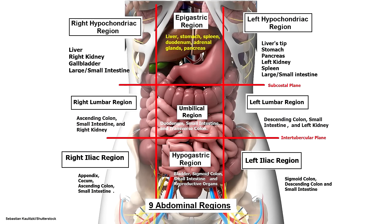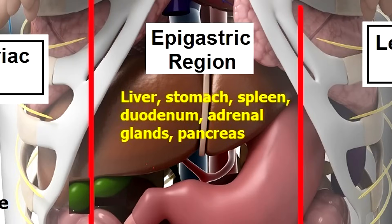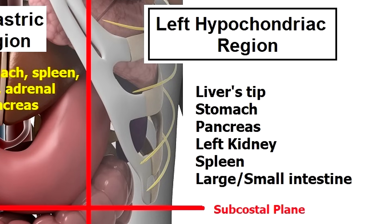Now let's take a look at some of the major organs in each of the nine regions. In most basic anatomy courses, professors probably don't expect you to memorize a whole list of organs, but you do need a general understanding of where the major organs are located. For the right hypochondriac region, you'll find the liver, gallbladder, right kidney, and portions of the small and large intestine. In the epigastric region, you'll find portions of the liver, as well as the stomach, pancreas, duodenum, spleen, and adrenal glands. In the left hypochondriac region, you'll find the spleen, large and small intestines, the left kidney, pancreas, stomach, and tip of the liver.